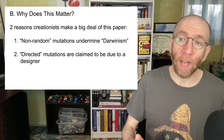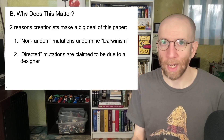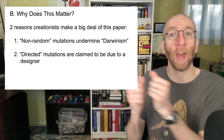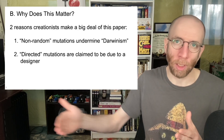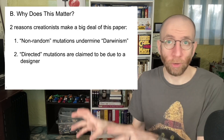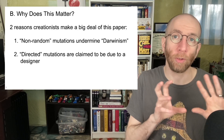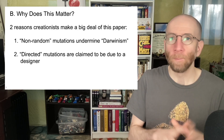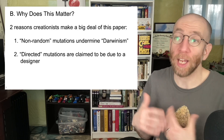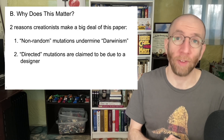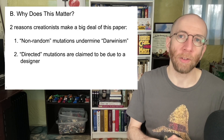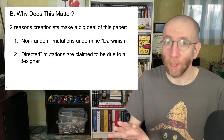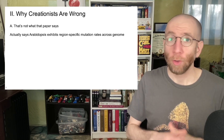The second reason is that creationists can take anything that looks directed or purposeful and use it to claim evidence of a designer. That can be the case whether the programming is front-loaded — so certain mutations are going to happen due to that programming — or whether there is ongoing intervention by the designer and creator. These arguments don't hold up because they ignore how there are lots of non-random mechanisms of evolution.